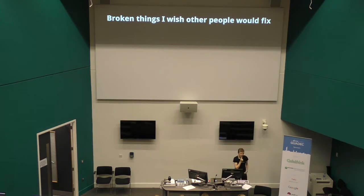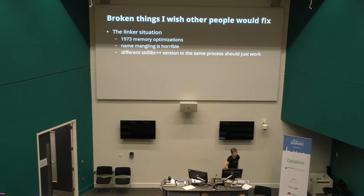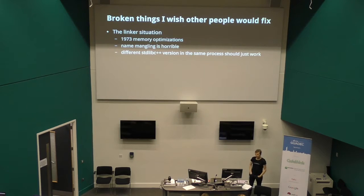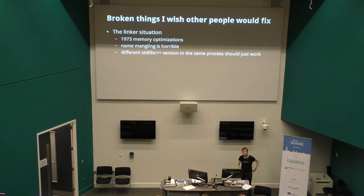Yesterday there was a mention that in GNOME we don't do hacks, we fix things properly. Since I have the stage, here are some things that are broken that I wish people would fix — I really can't fix them because I don't have the necessary skills. The main one is the linker situation. Out of all the tools in a modern Linux distribution, the linker is perhaps the oldest. In 1973 it made sense: if you link static libraries, it looks up all the symbols you use, then throws away the rest to save memory. But if you have another dependency that uses a different part of the .a file, you need to specify it twice — it's a complete disaster.